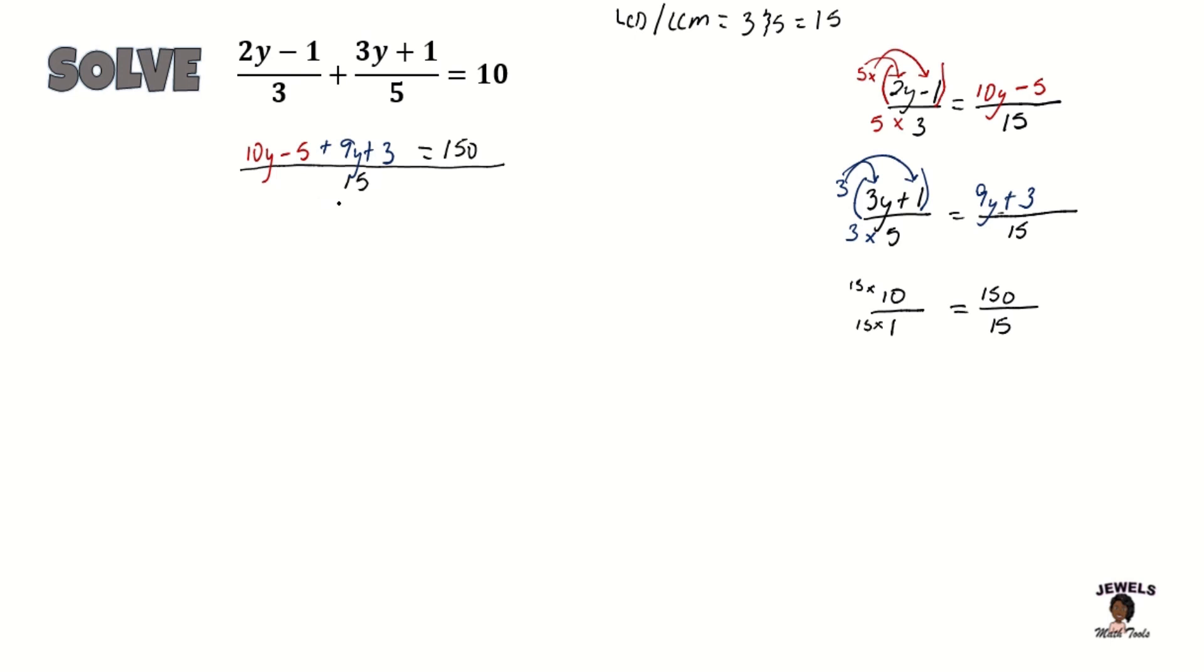Now that everything has the exact same denominator, we don't have to use our denominator anymore. So that means I'm going to be moving my terms down. And as I move them, I will also begin to collect my like terms together. Remember that when you move these terms, always move them with the sign that is directly in front of them. So we have 10y plus 9y is going to equal to 19y. And negative 5 plus 3 will give us a minus 2, which is equal to 150.